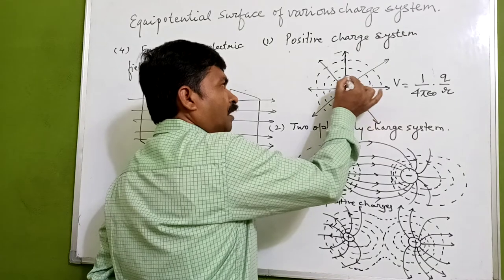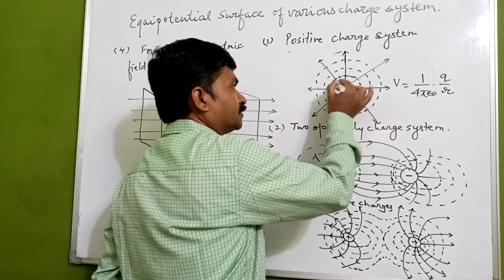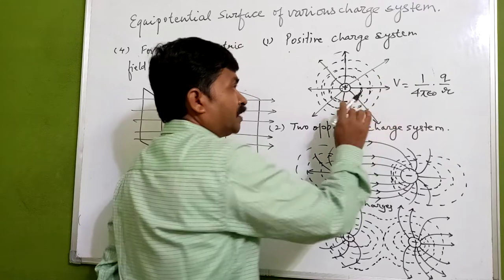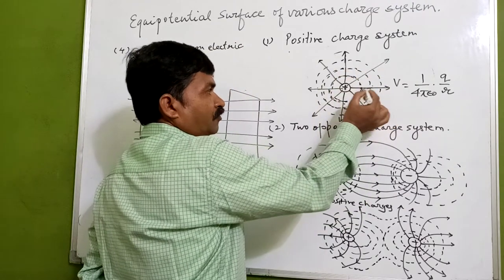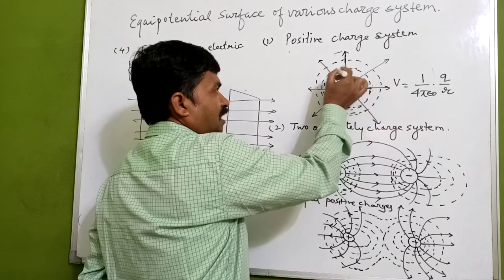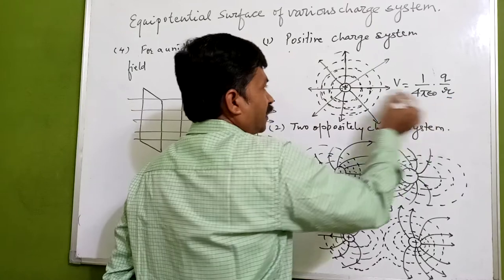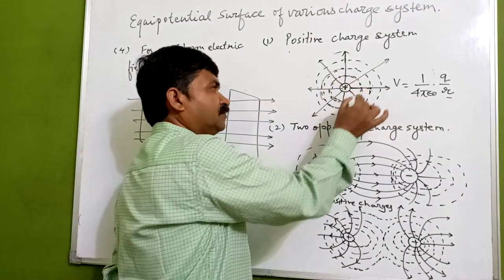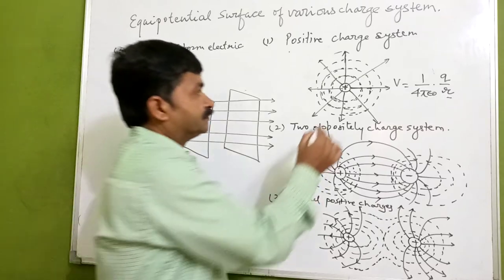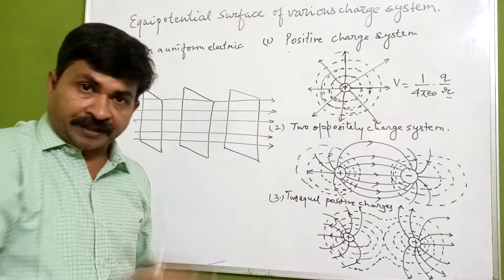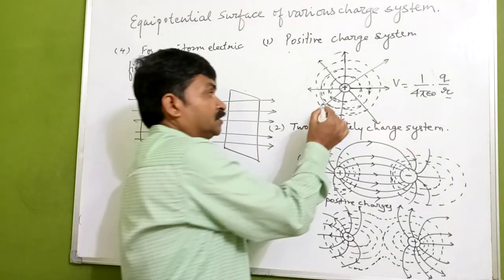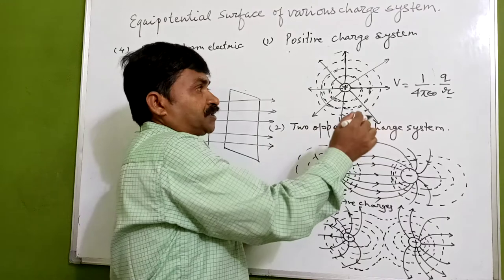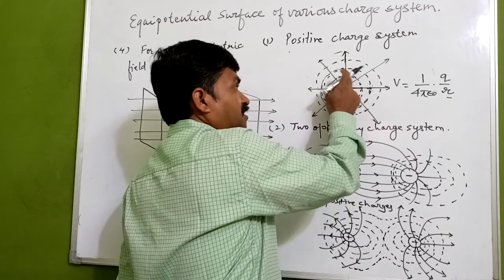If we move in all directions from this charge at the same distance, we are on an equipotential surface. If we move away from this charge again at the same distance in all directions, we will have the same electric potential. So for a positive charge where electric field lines come out in all directions, the equipotential surfaces are at constant potential.